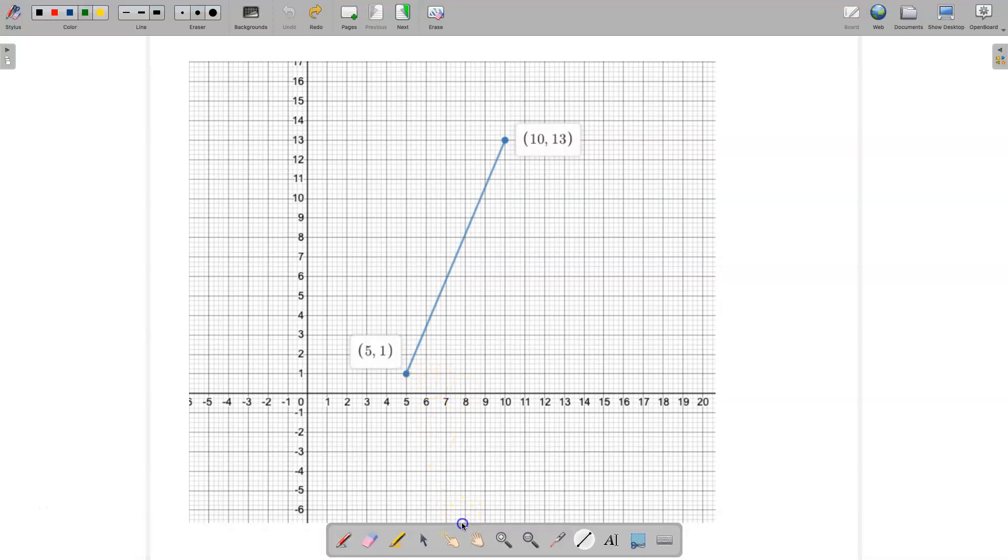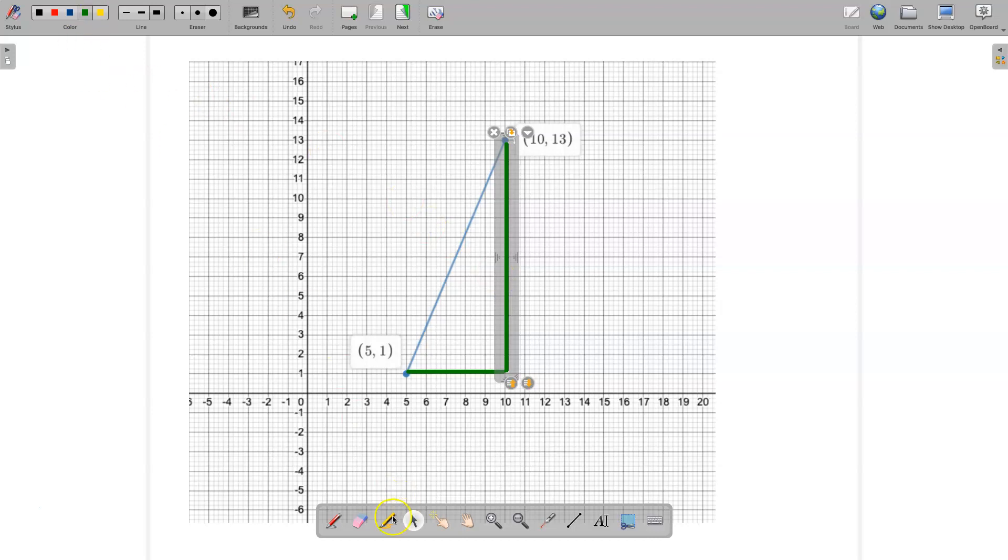Looking at the distance between two points, (5,1) and (10,13). What I want to do is draw a right-angled triangle between these two points. I'm going to draw it there and there, that's just a rough little right-angle triangle, and then we're going to mark on there the distance from here to here.